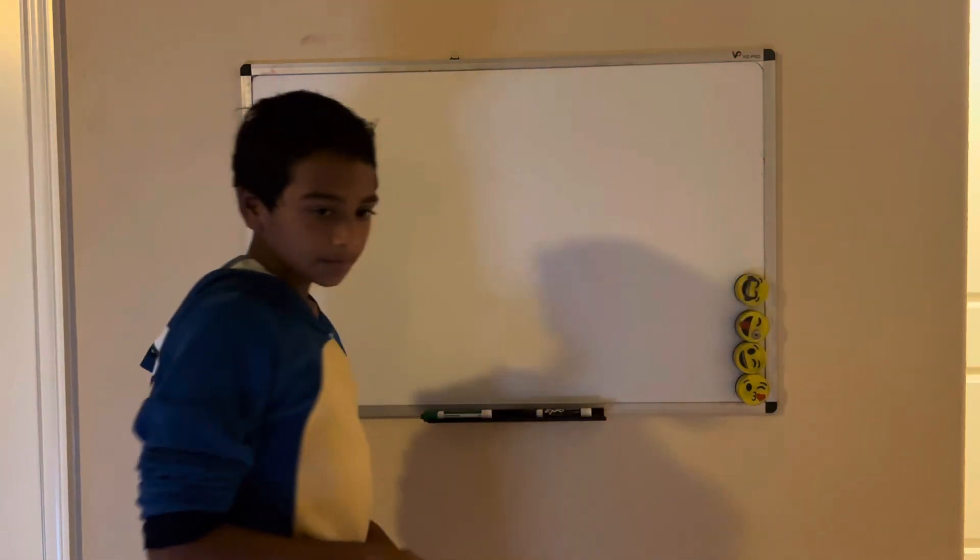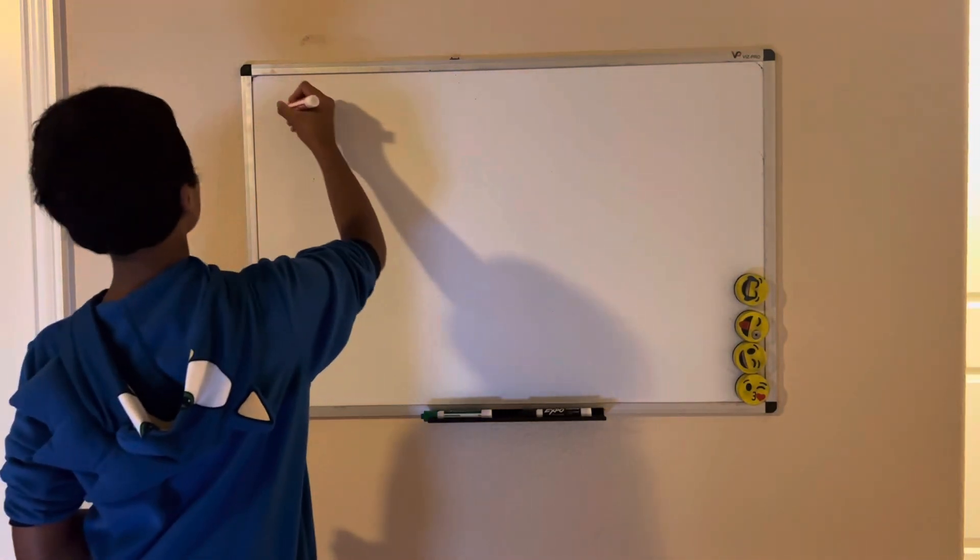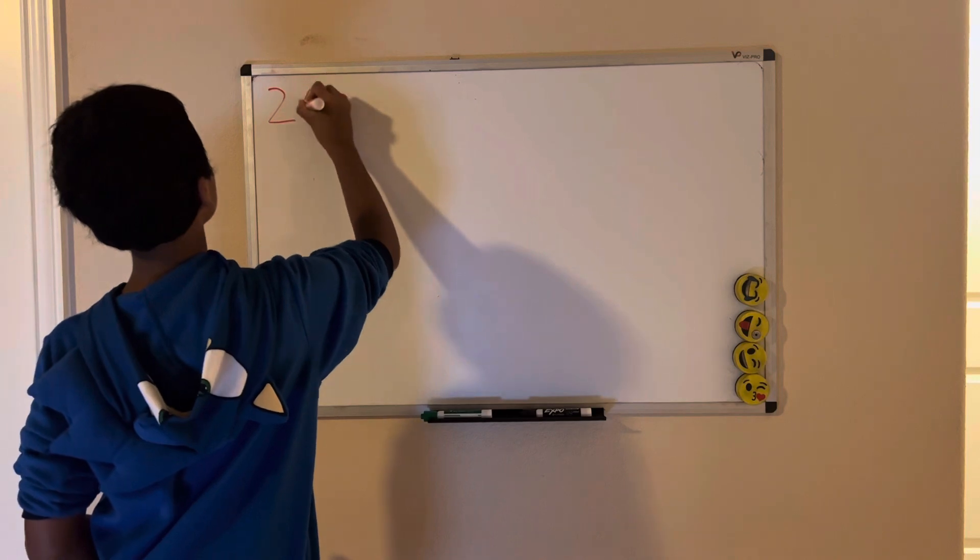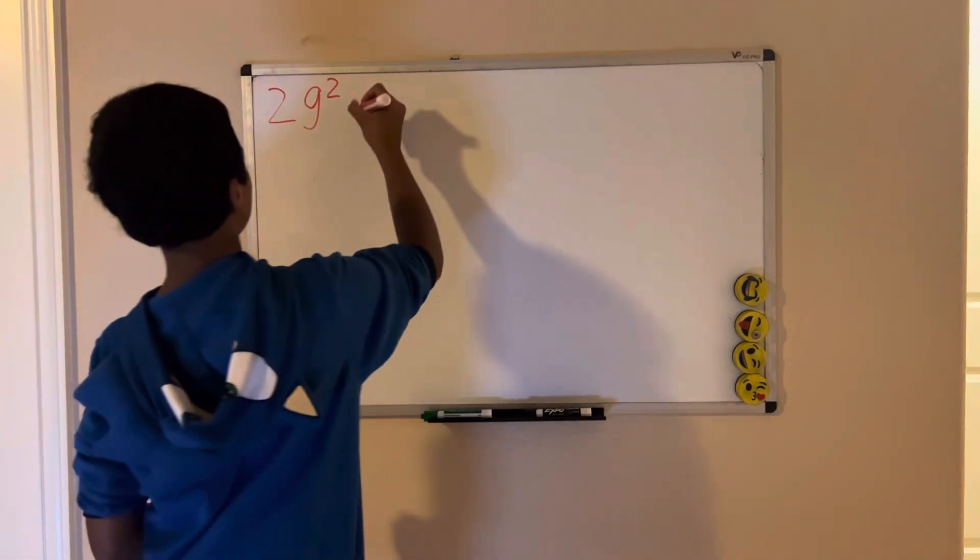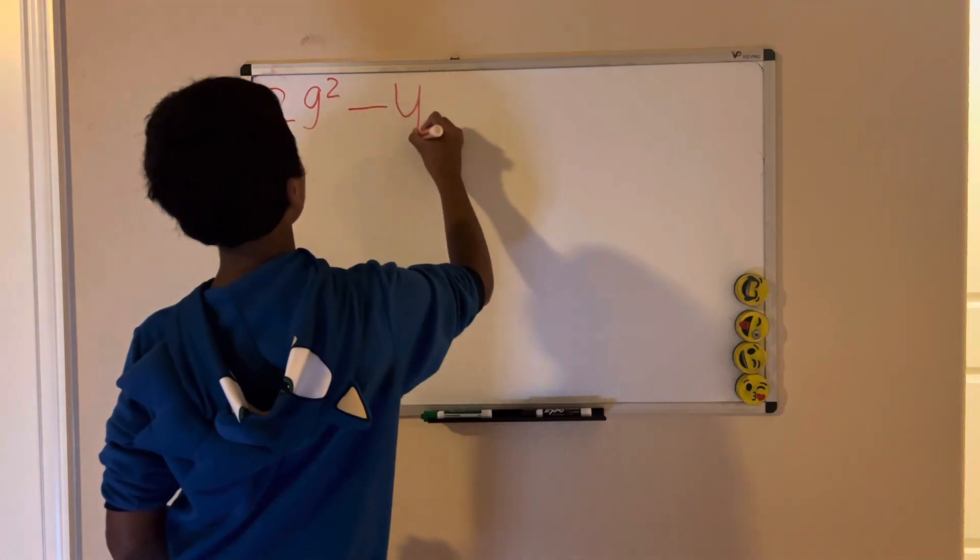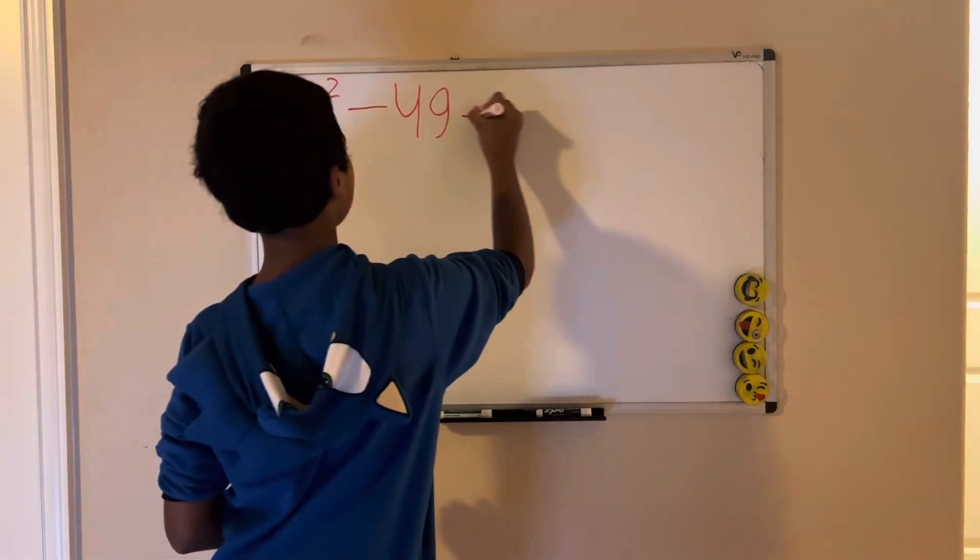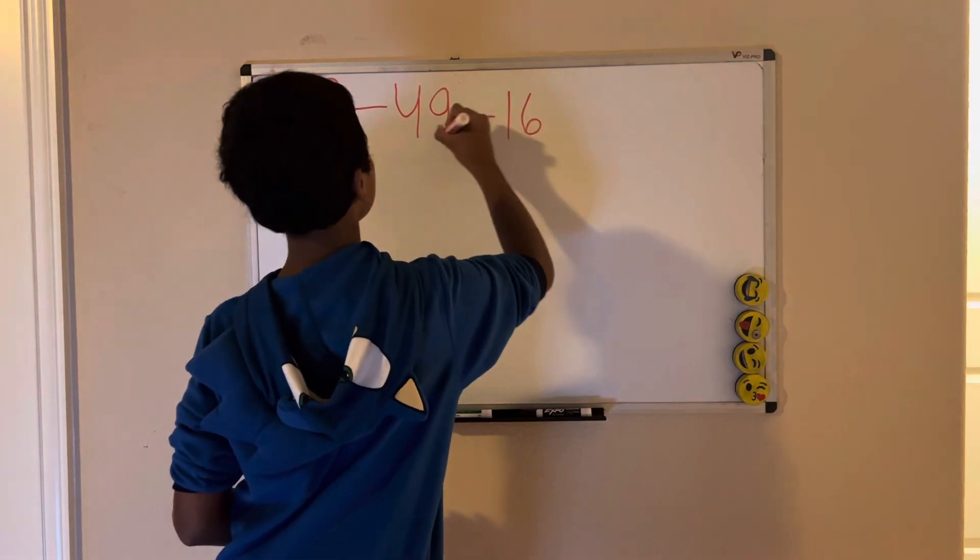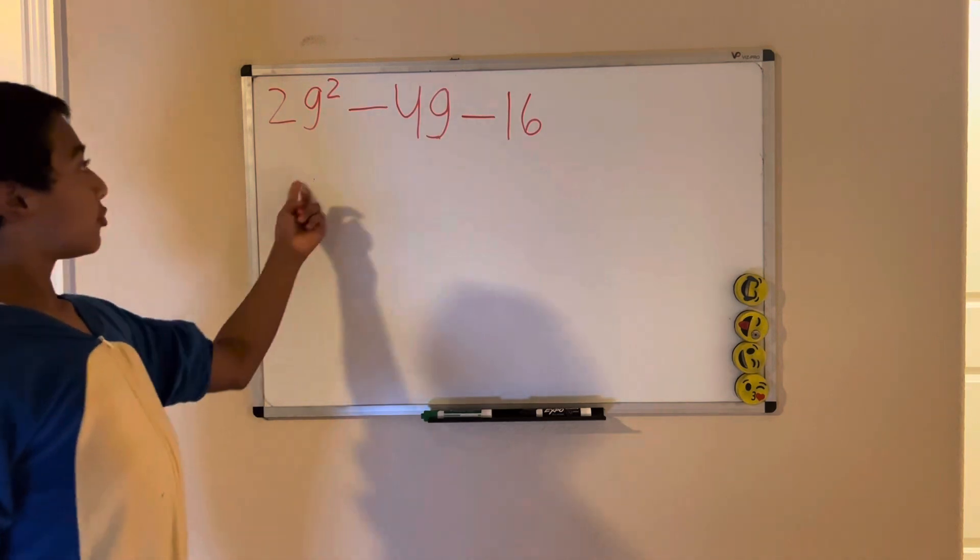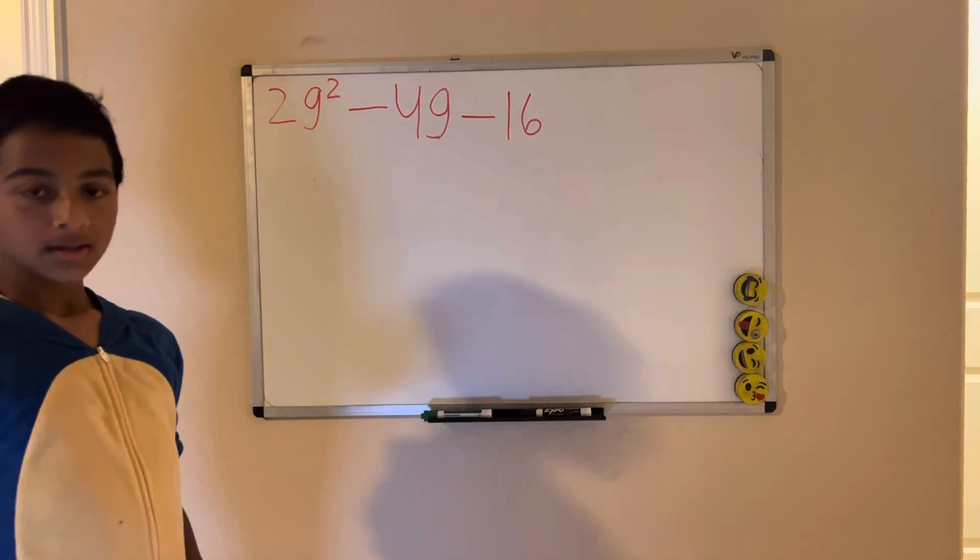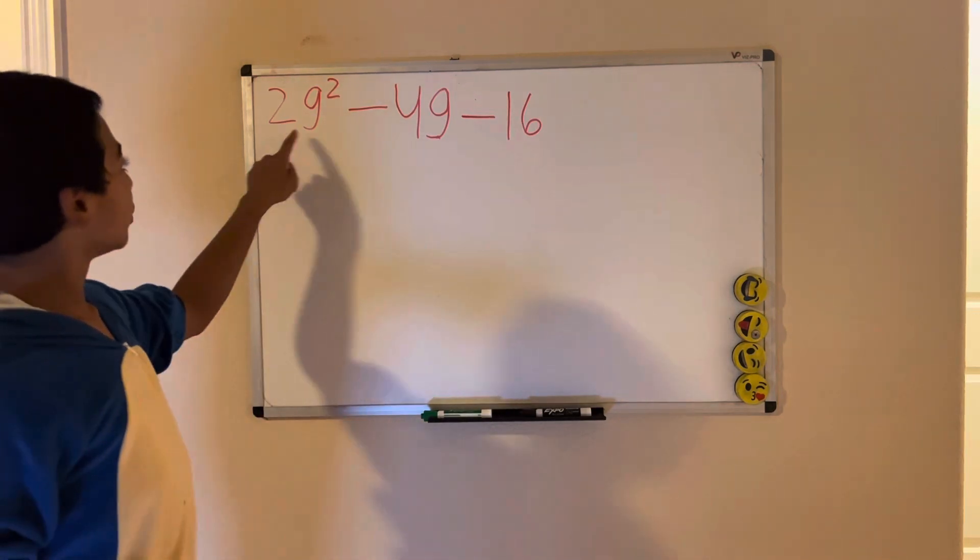Alright, let's say we have 2g squared minus 4g minus 16. How would you factor this one? Same thing here. We need to find the GCF, which is 2.